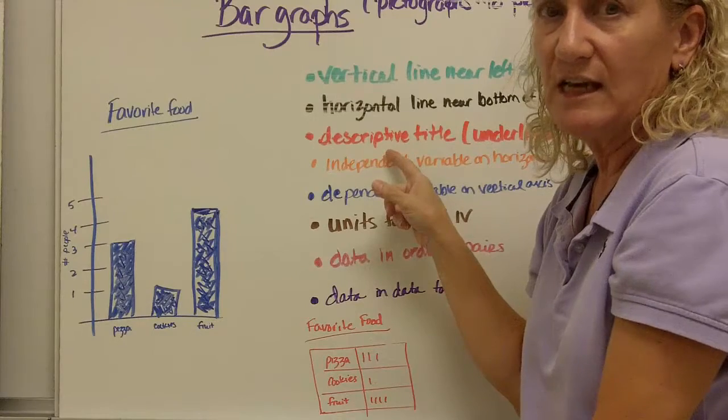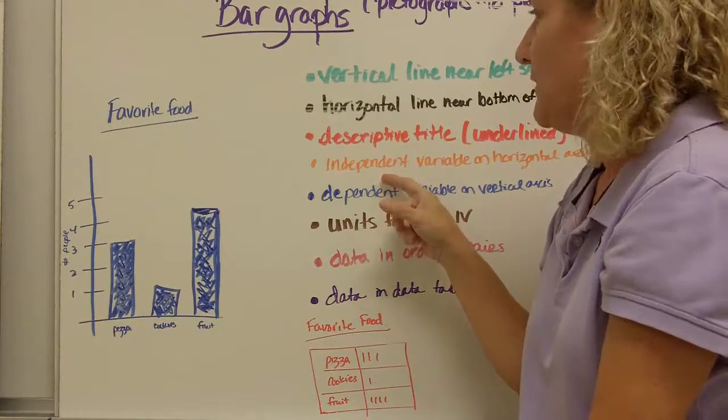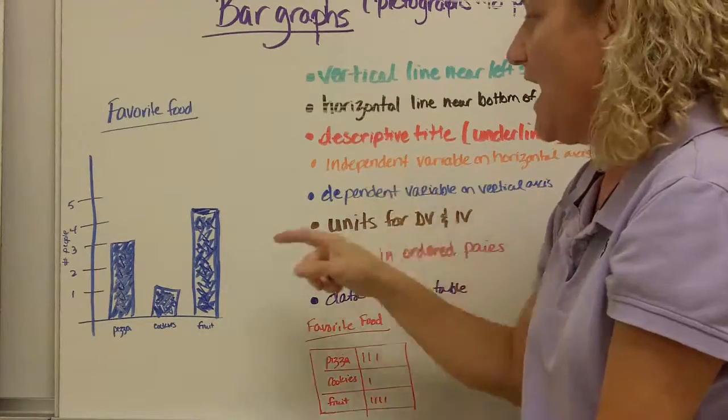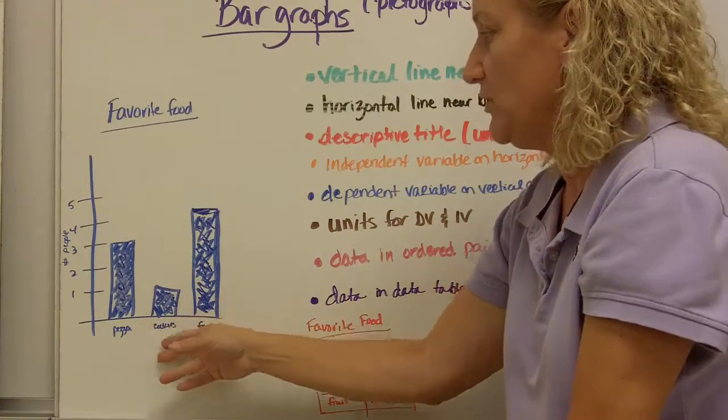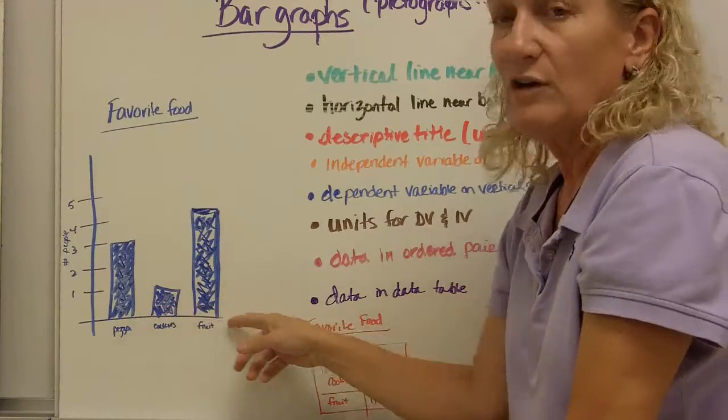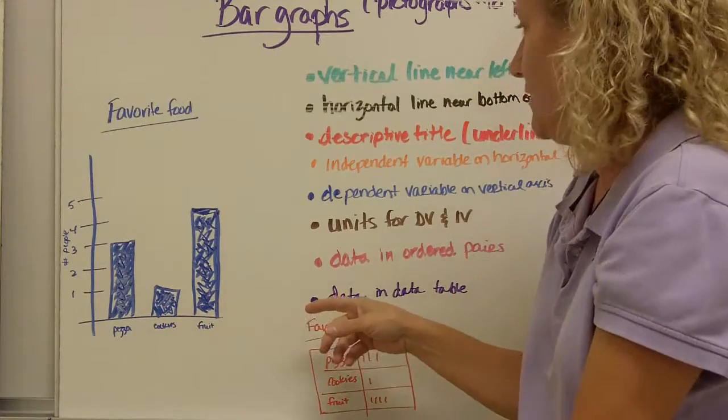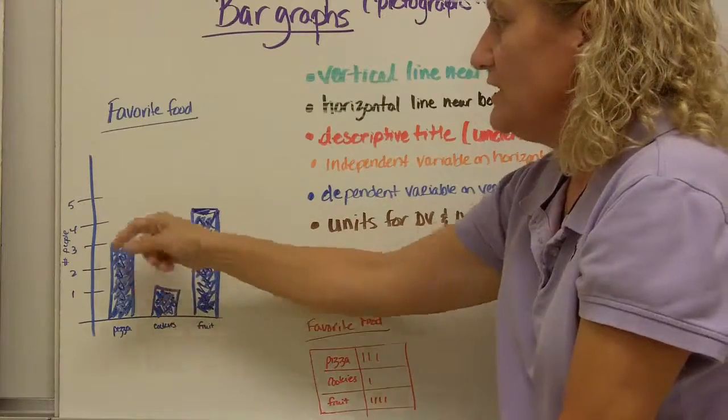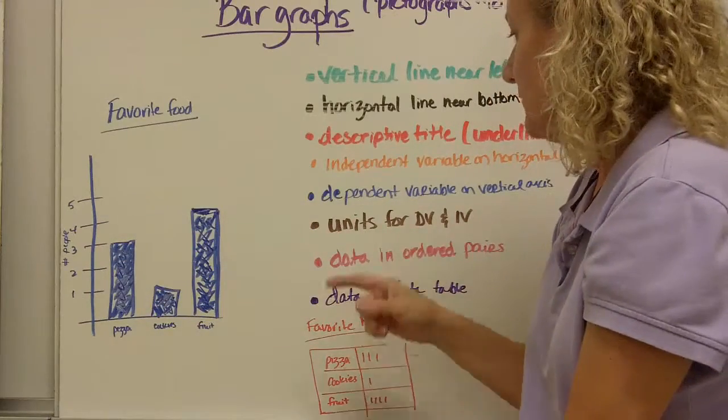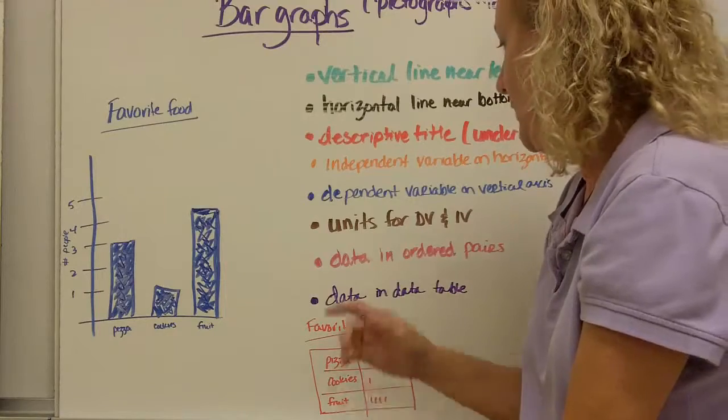Always a descriptive title. And it should be underlined. Your independent variable on the horizontal axis. So in this case, we did favorite food and we gave a choice between pizza, cookies, and fruits. So those were our three choices. That was our independent variable. Our dependent variable on the vertical axis. So in this case, it was number of people.